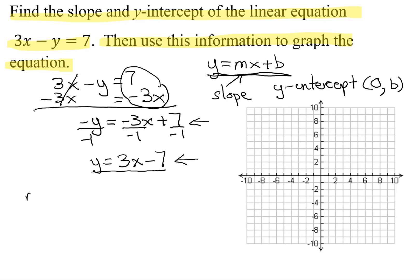So, what is my slope? My slope is the coefficient of the x-term, which is 3. And what is my y-intercept? My y-intercept is the ordered pair 0, and what's the y-coordinate? Negative 7. So, there's my y-intercept, and there's my slope.